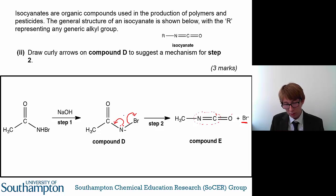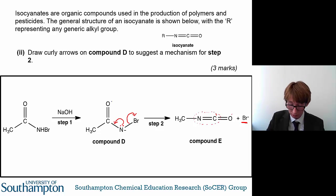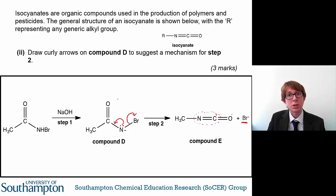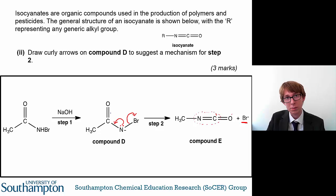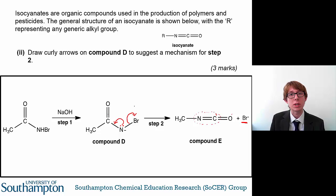Now, as you should be aware, a carbon cannot have five bonds attached to it — it can only have four. Counting here, you now have one, two, three, four, five bonds with this new double bond formed. So one of these bonds needs to be broken.